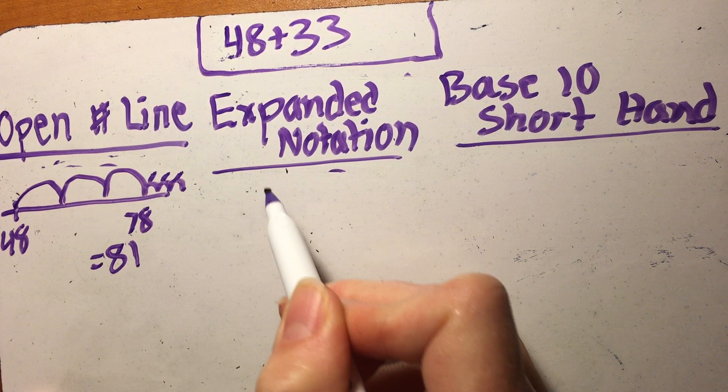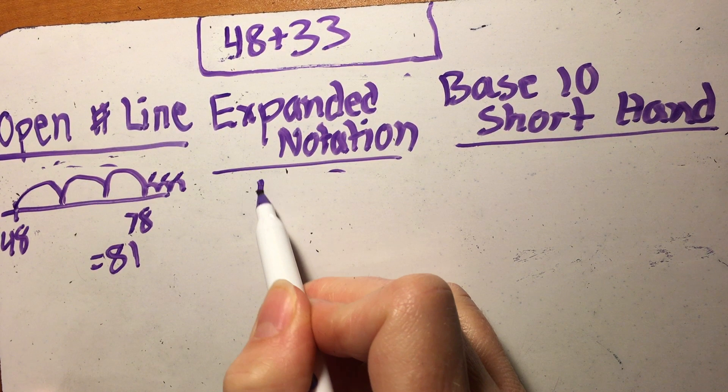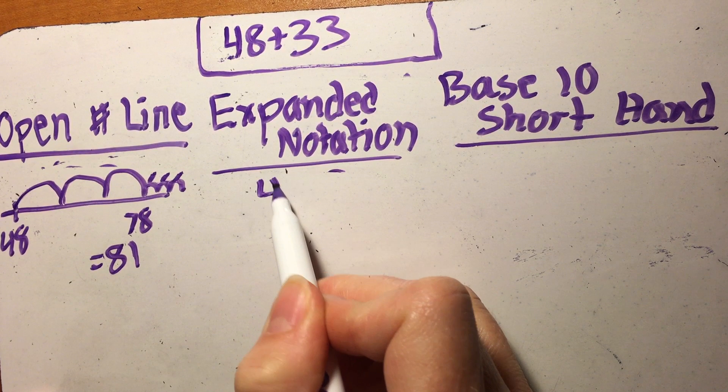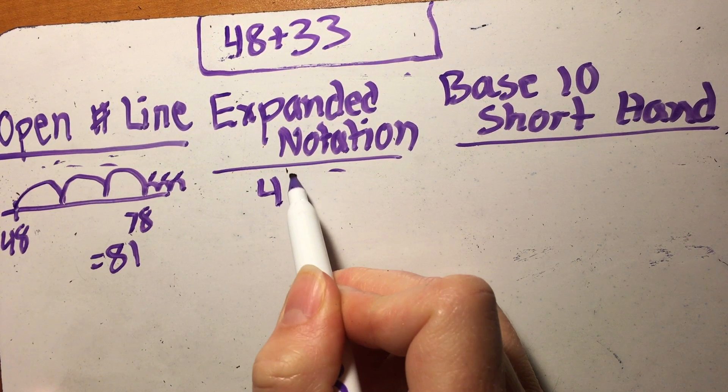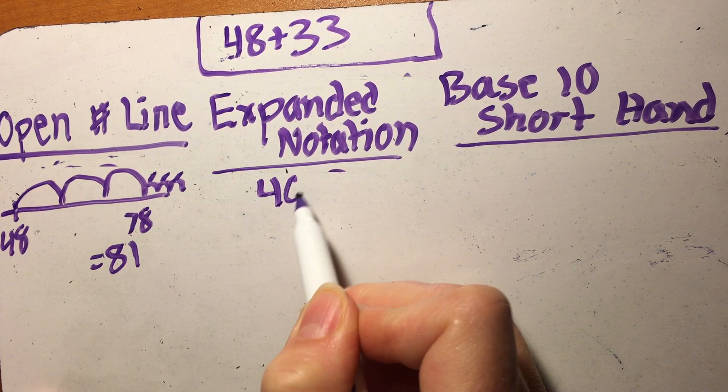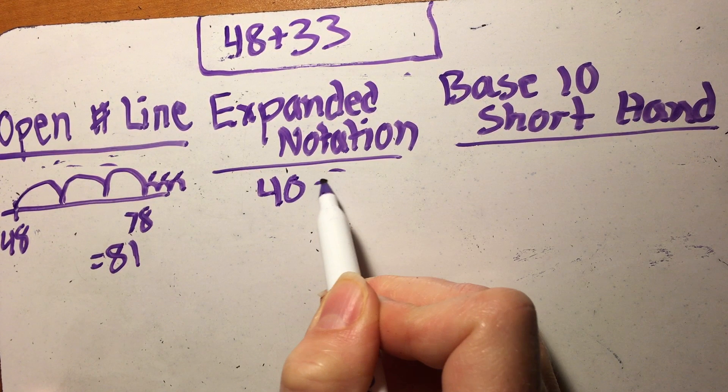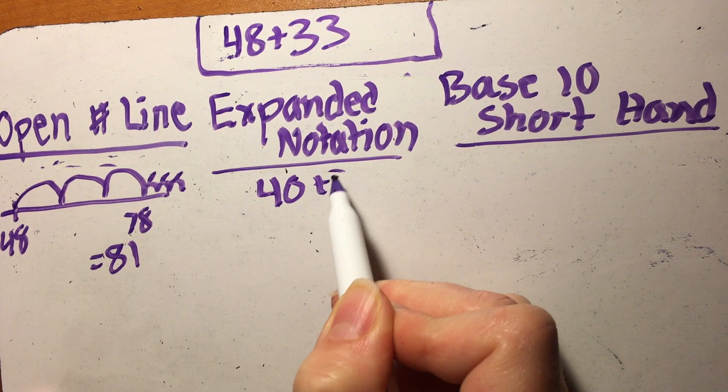So now we're going to move on to the expanded notation. In case you don't know what expanded notation is, I'm just going to break apart the numbers, and we practiced this a lot before we got to the actual addition. So to expand 48, it's just like it sounds: 48, so we'll write 40 plus 8.